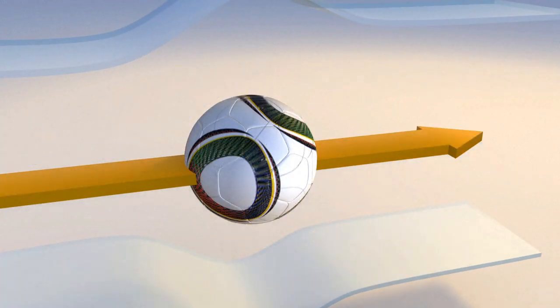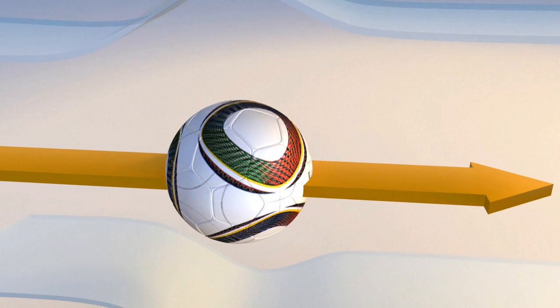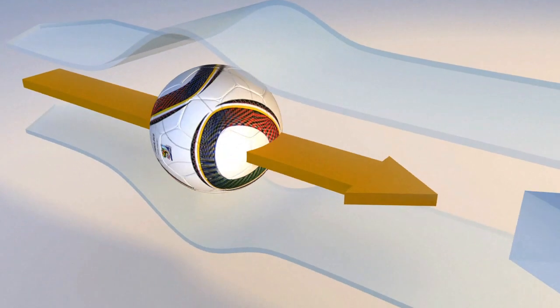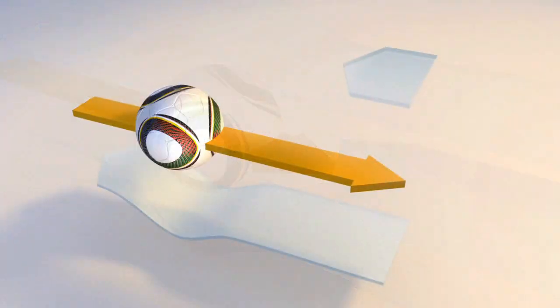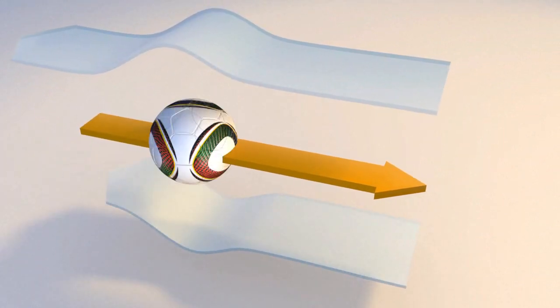As it slows down, the airflow becomes more streamlined, increasing drag and slowing the ball further. This is when the curl effect is produced, known by physicists as the Magnus Force.